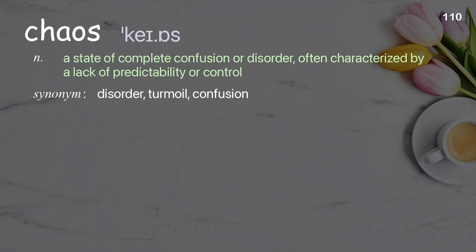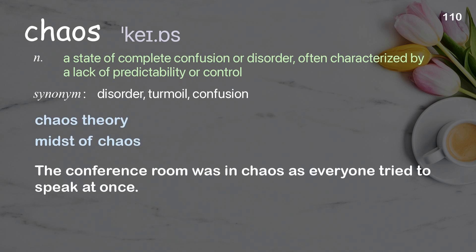Chaos: a state of complete confusion or disorder, often characterized by a lack of predictability or control. Examples: chaos theory, midst of chaos. The conference room was in chaos as everyone tried to speak at once.